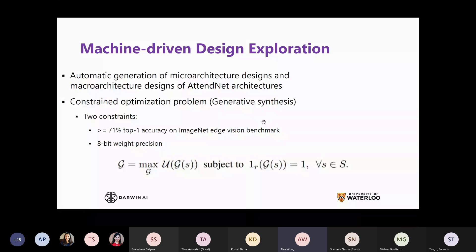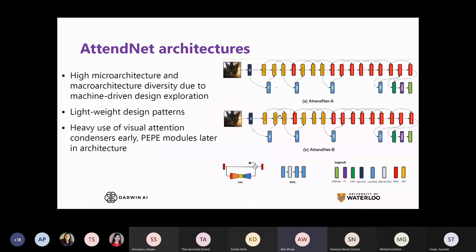Given this new visual attention condenser, we use a machine-driven design exploration approach to automatically generate macro-architecture and micro-architecture designs. We use generative synthesis as a mechanism for machine-driven design exploration, which is based on a constraint optimization problem. We try to learn the best generator that can generate networks meeting conditions, with constraints of at least 71% top-1 accuracy on the ImageNet Edge Vision benchmark and 8-bit weight precision.